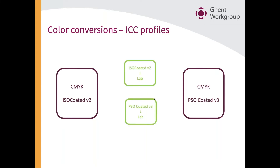A very common way of doing color conversions is using ICC profiles — that's what people usually think of when they talk about color conversion. So if we're doing that here, there would be two ICC profiles involved: an ISO Coated v2 profile and a PSO Coated v3 profile. These profiles are essentially small software components. Each ICC profile knows how to convert from a particular color space — whether CMYK or RGB — to an abstract color space like Lab.